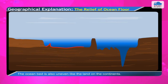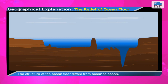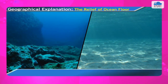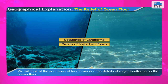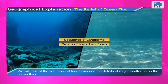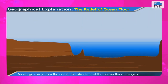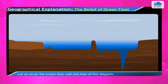The ocean bed is also uneven like the land on the continents. The ocean floor relief consists of all submerged landforms. The structure of the ocean floor differs from ocean to ocean. As we go away from the coast, the structure of the ocean floor changes.